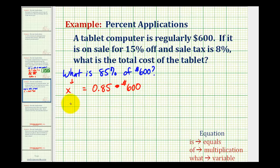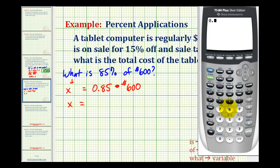So to solve for x, which is the sale price, we'll have to determine this product. So we have 0.85 times 600. So the sale price is $510.